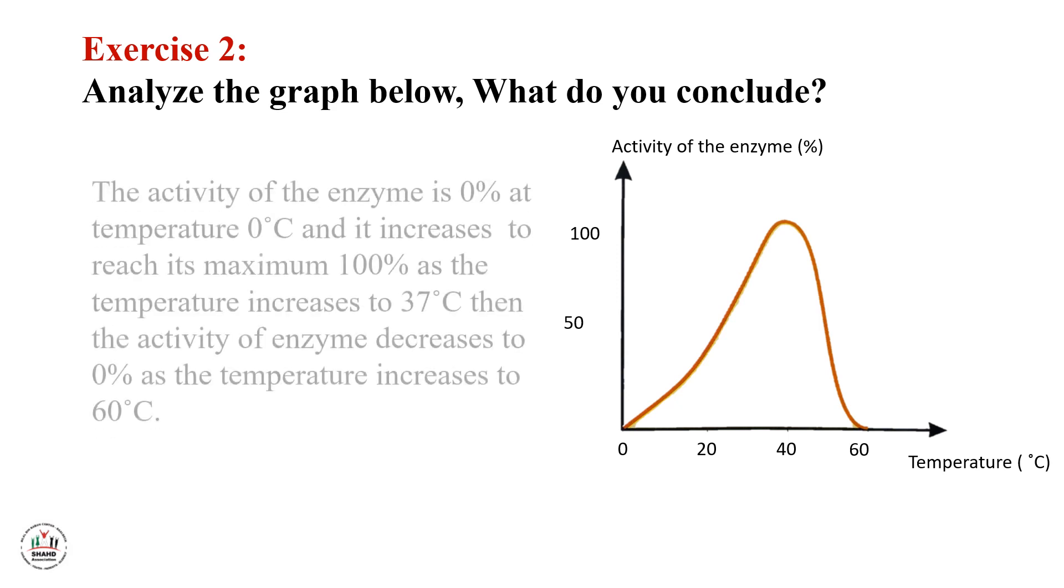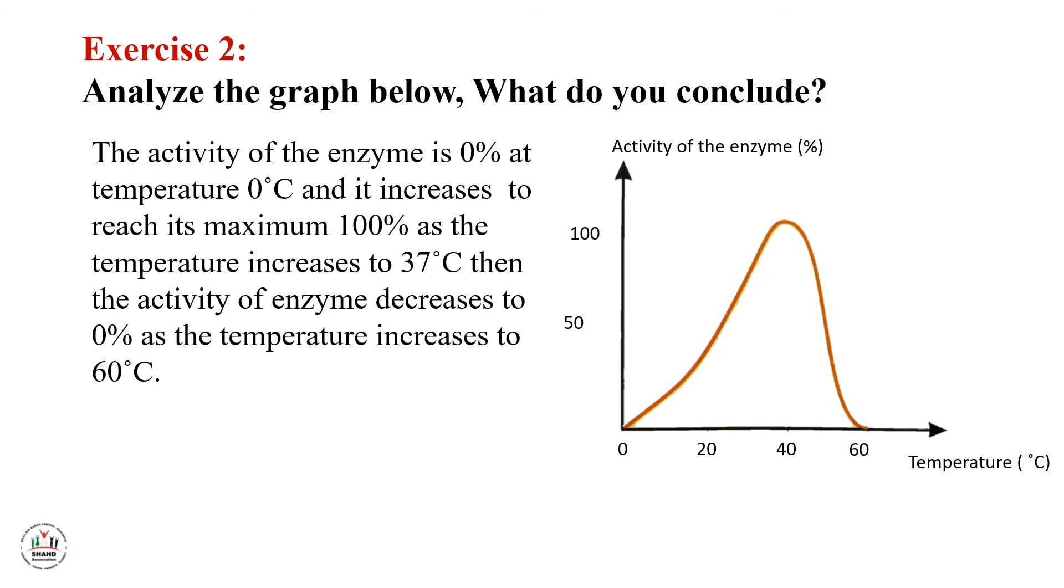The activity of the enzyme is zero percent at temperature zero degree and it increases to reach its maximum 100% as the temperature increases to 37 degree. Then the activity of the enzyme decreases to zero percent as the temperature increases to 60 degree.